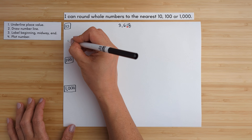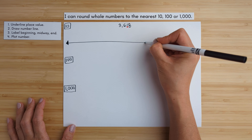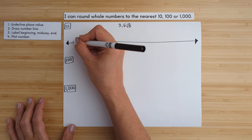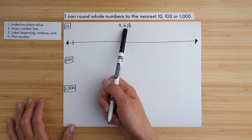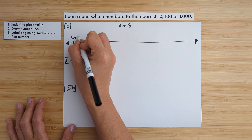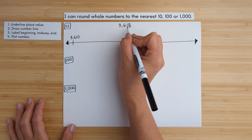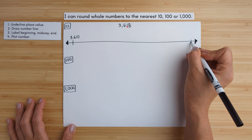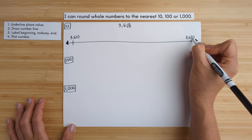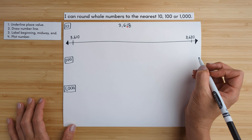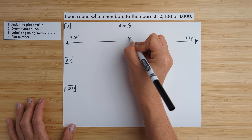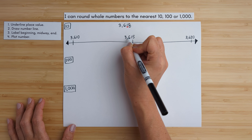Then we're going to draw a number line and label the beginning, midway, and end point. The beginning number is going to be 3,618, but we keep it as 3,610 — so 3,610, the tens digit stays the same. The end point is going to be one more than the underlined place value, so 3,620, because two is one more than one. The midway is halfway between 3,610 and 3,620, which is 3,615.